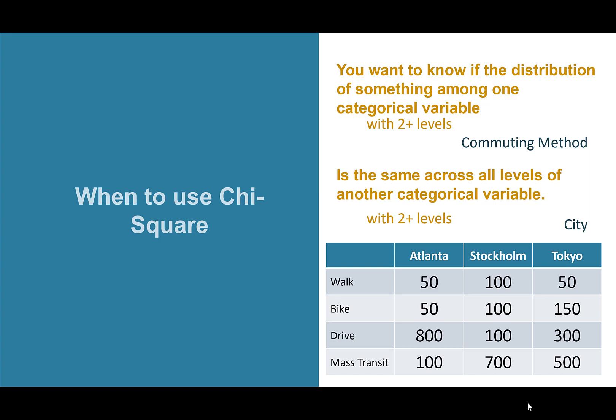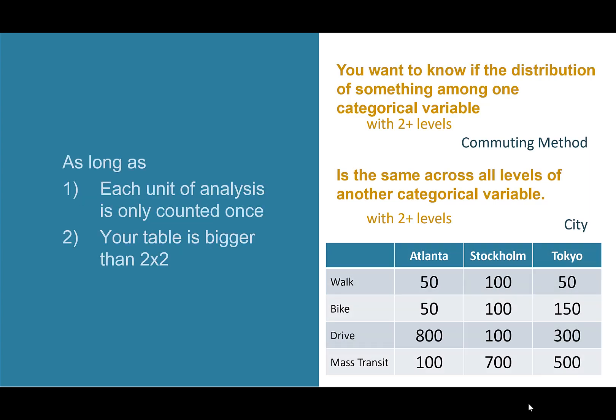Chi-square is looking at distribution — the spread of your data — which is different from many other single-factor statistics that look at whether the central values of two or more sets of data are the same. A couple of stipulations: each unit of analysis is only counted once. Someone couldn't say their commuting method is both biking and driving — they'd need to pick their primary method. Also, your summary table needs to be bigger than two by two. If it's one by two or two by two, use a test of proportions, as discussed in part one.